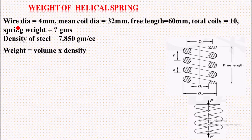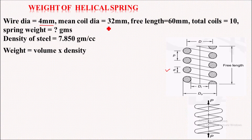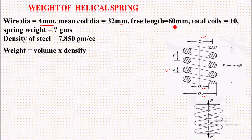So here we have wire diameter 4 mm — that is small d, the wire diameter of the spring. Mean coil diameter is 32 mm, that is capital D. Mean coil diameter is nothing but the average of inner diameter and outer diameter. Free length is given as 60 mm.